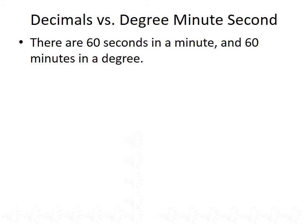There are two ways to write an angle in degrees: as a decimal, or broken down into degree-minute-second format. There are 60 seconds in a minute, and 60 minutes in a degree. So we can write things with the number of degrees, the number of minutes, and the number of seconds, and we should be able to convert between these two notations.